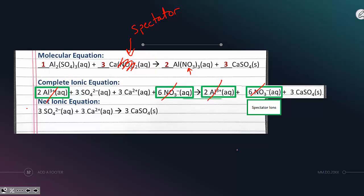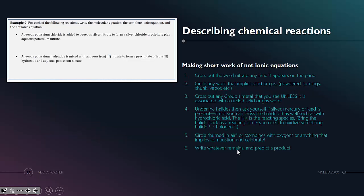When you remove your spectator ions, that gives you your net ionic equation. There used to be a whole subsection of the AP exam on writing net ionic equations. That has since been removed. However, there are some good tips to take from it if you're ever asked to predict the products of a reaction.